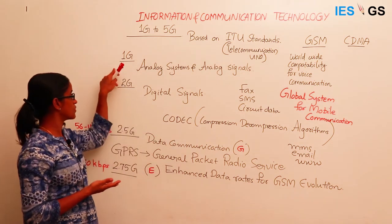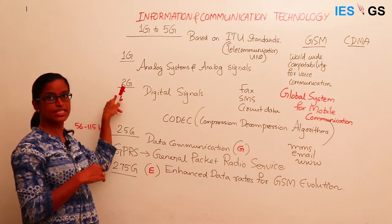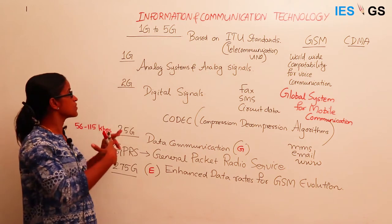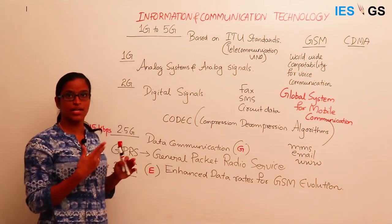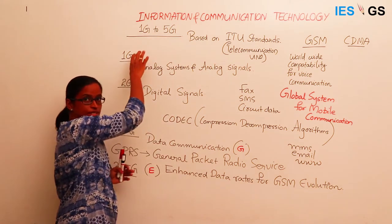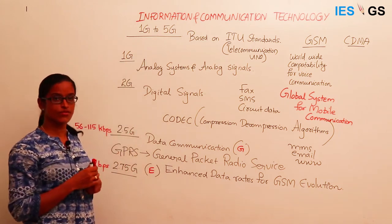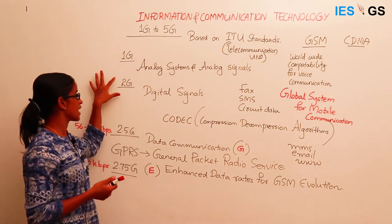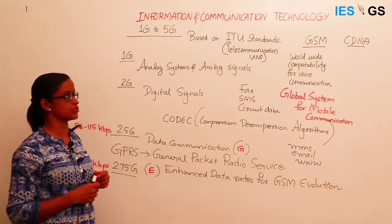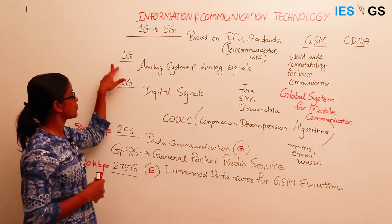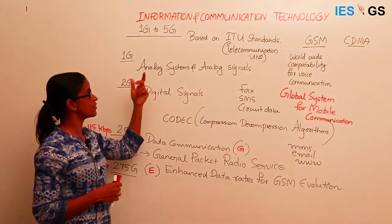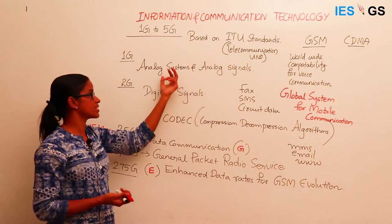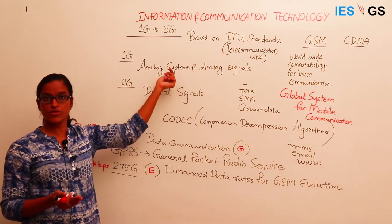For example, from 1G to 2G, the change was from analog technology to digital technology. Systems using analog signals constitute the first generation cellular forms, and when digital signals started, it came as a different standard — 2G. In the first generation, the signals used were analog signals and the systems which controlled them were also analog.